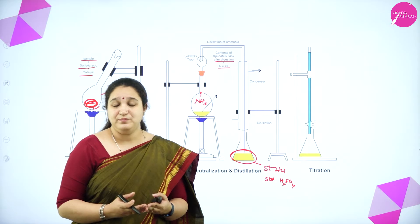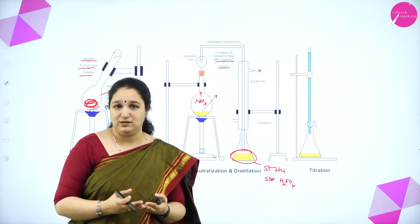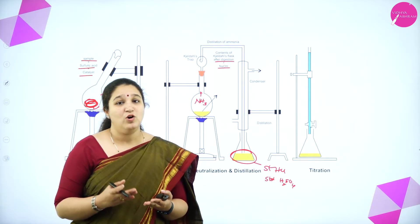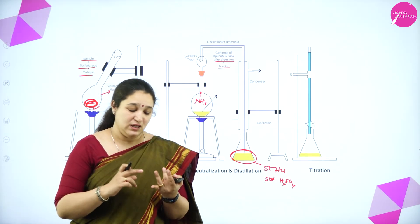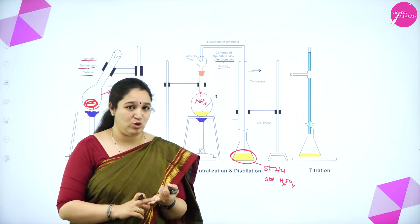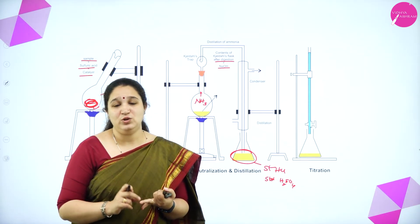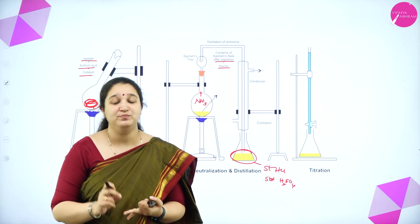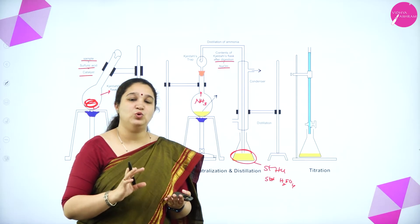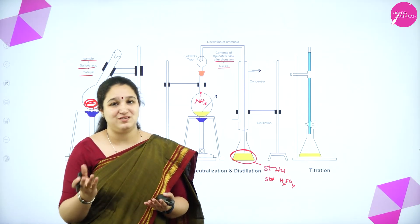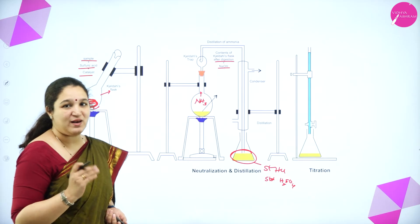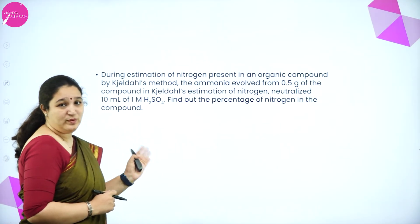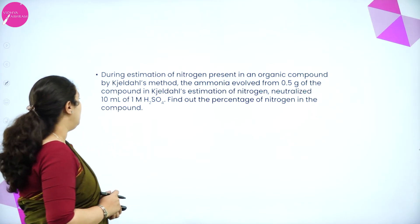For the formula: if we used HCl acid, percentage of nitrogen = 14 × M × V × 100 / (1000 × mass of organic compound), where M and V are the molarity and volume of standard HCl. With H₂SO₄, we use 2MV instead. That is the only difference. Next, here is the numerical based on Kjeldahl's method.